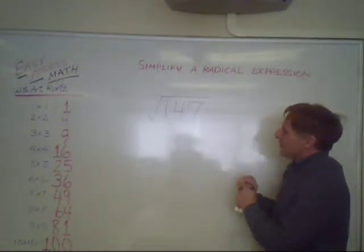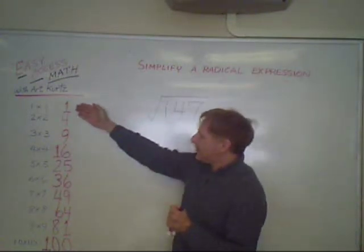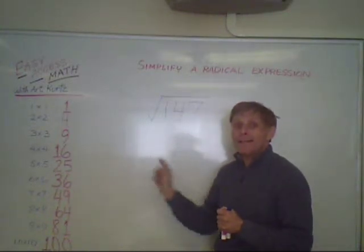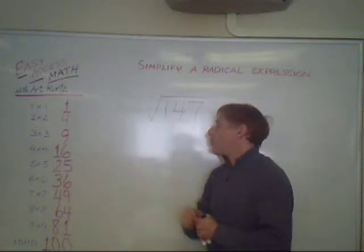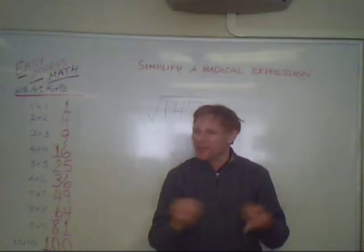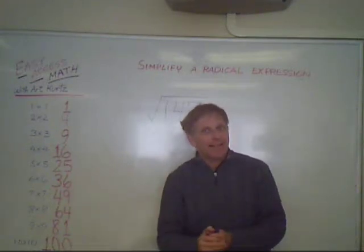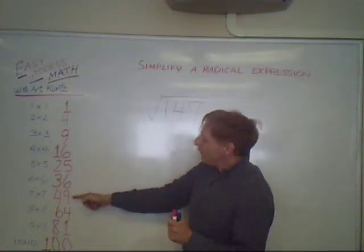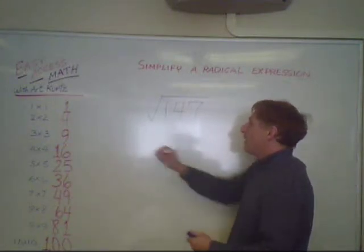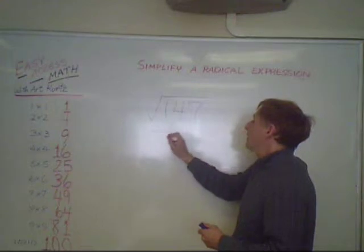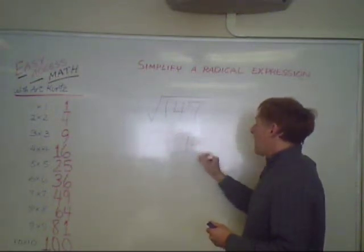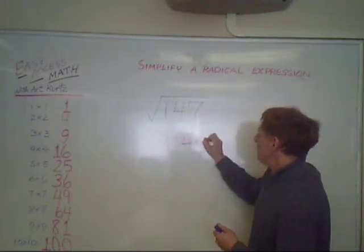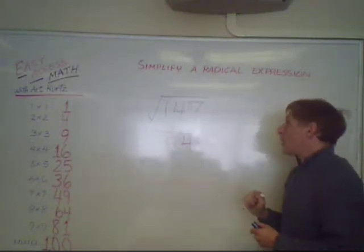147 looks like a terrible number, but if you take your time and look at our list and divide each of these numbers into 147 — try 25, it won't work; try 36, it won't work out to a whole number, you'll get a decimal. But if you try 49, it goes into 147 three times. So I could have 3 and 49, and 3 times 49 gives me 147.